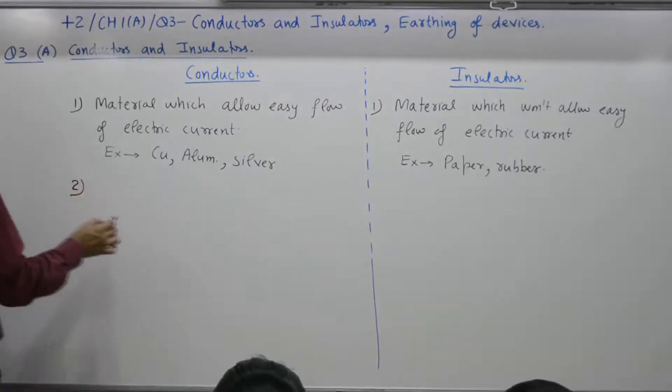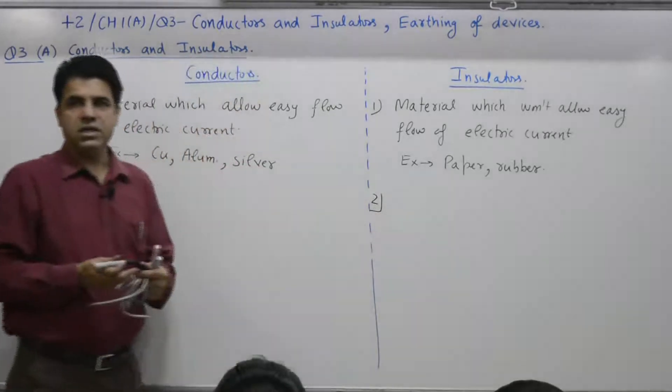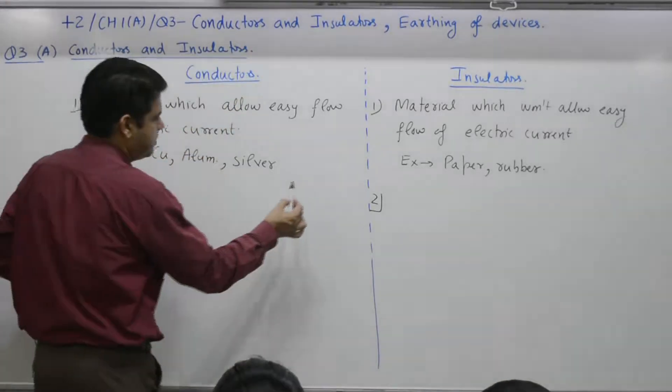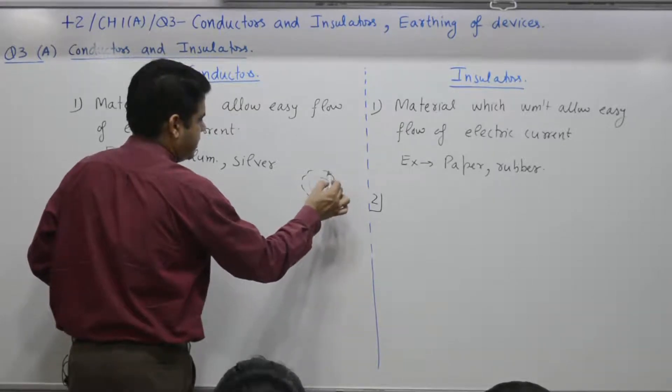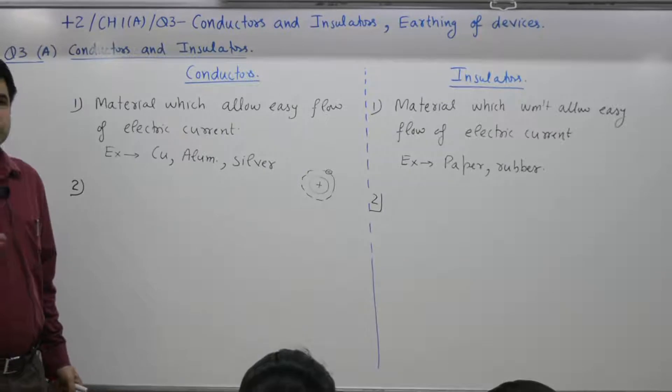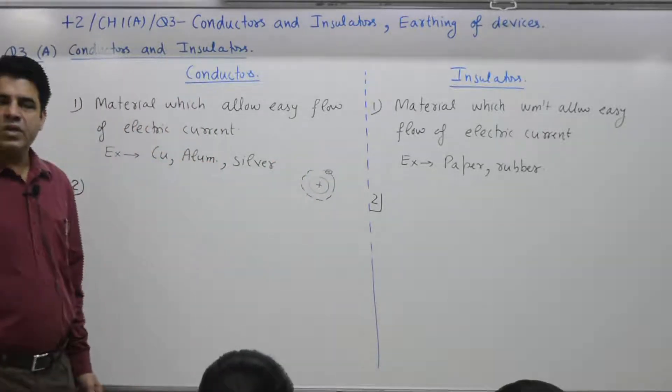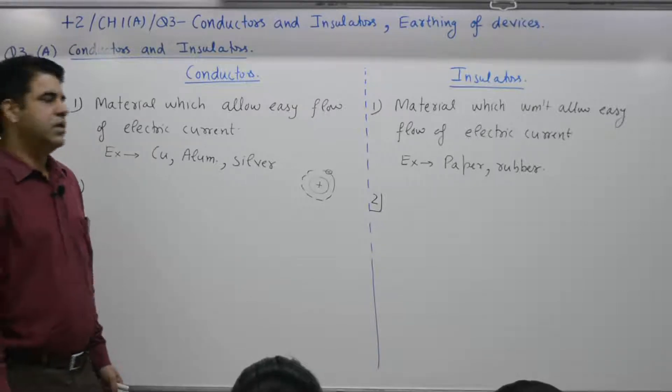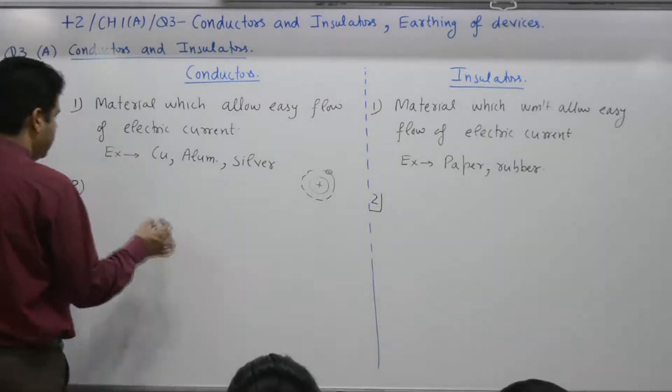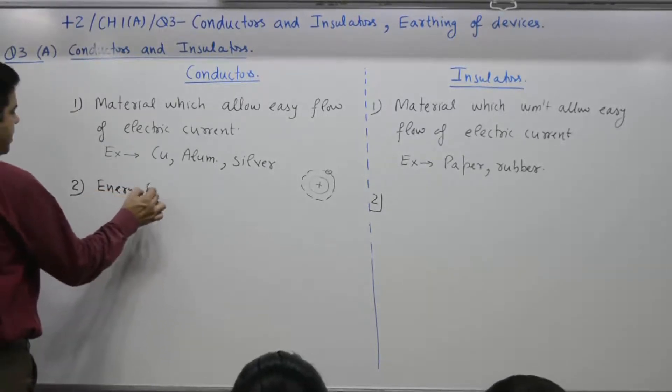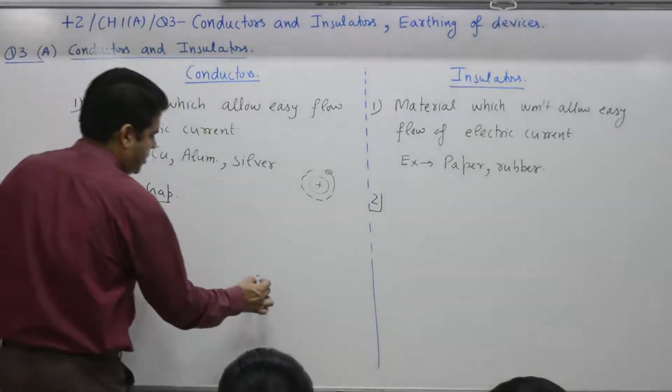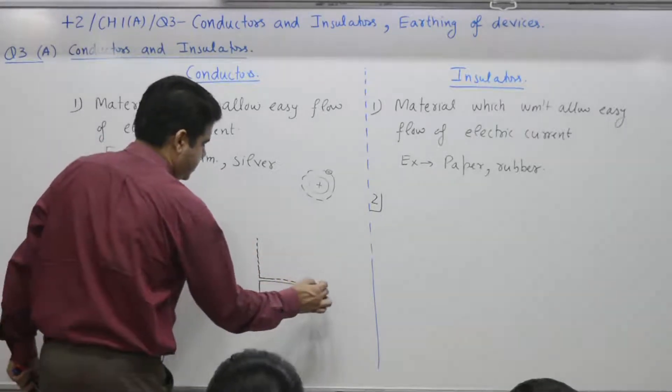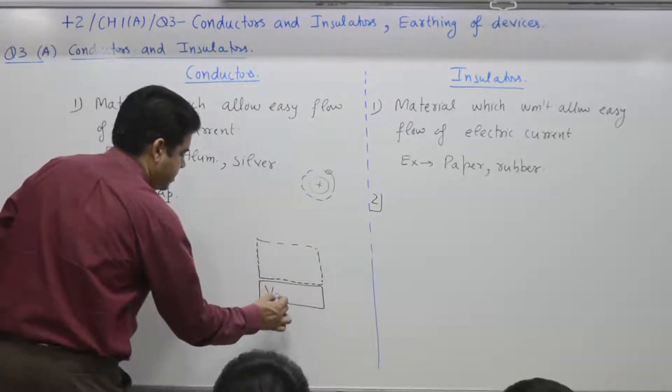The issue is why some materials are good conductors and some are insulators. In every material, energy is required. For example, a positive charge and electron are there. In every material, some amount of energy is required to detach it. We represent this through the energy gap diagram. This is valence band, very close to or overlapping, almost zero.